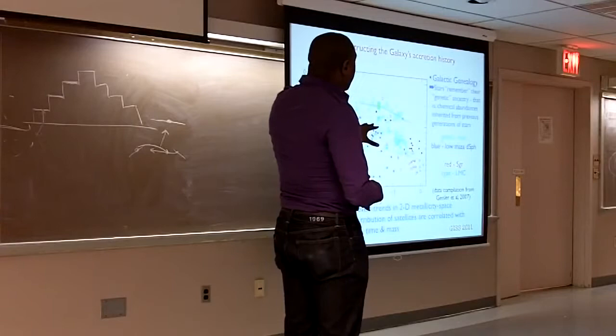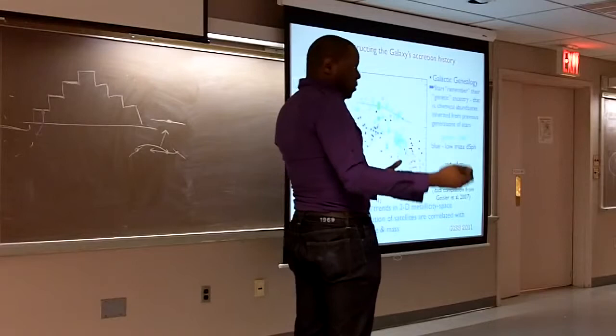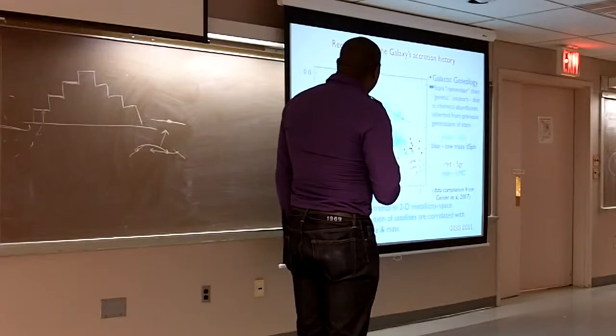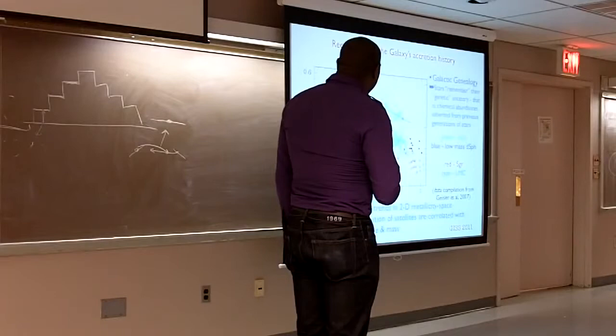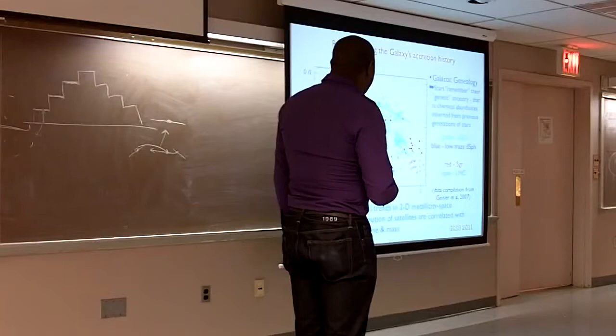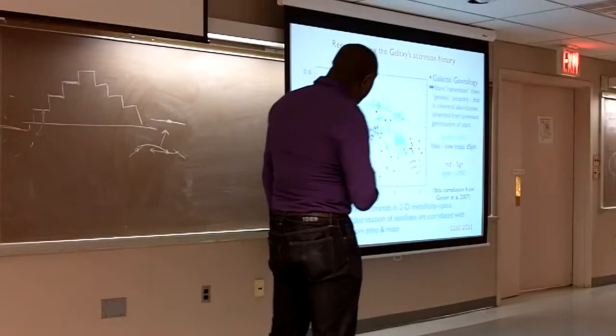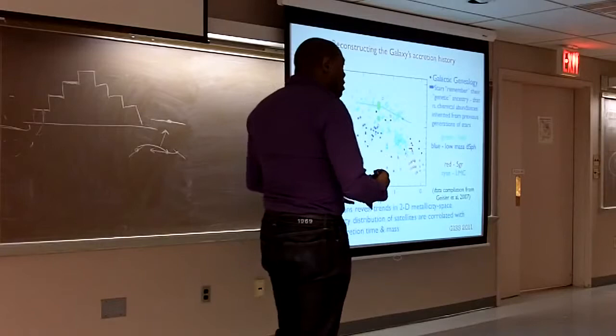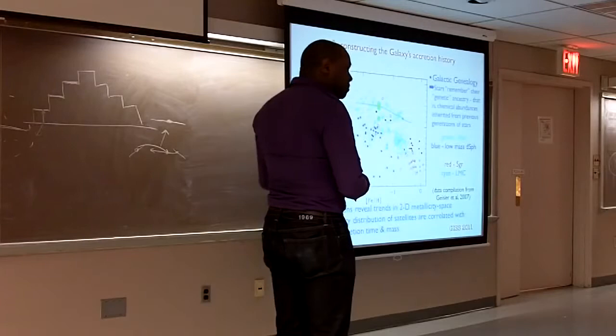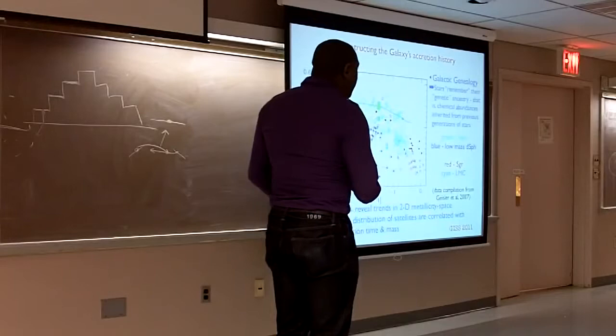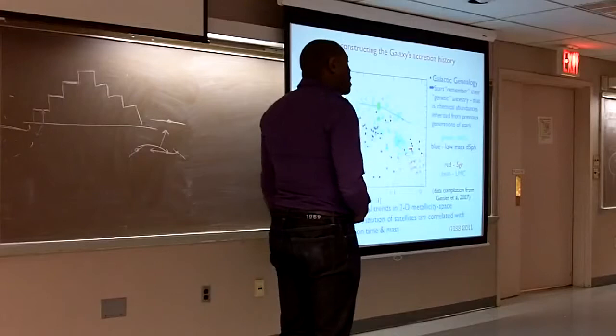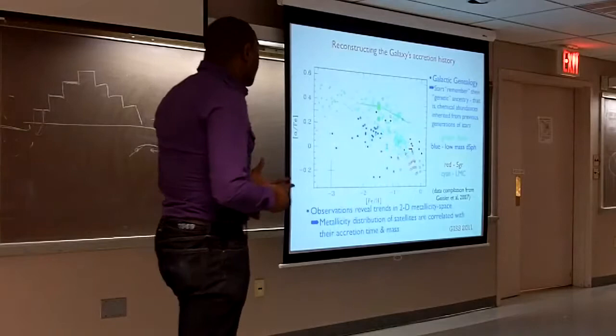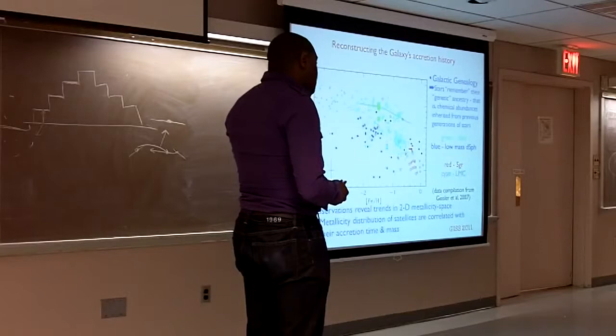And so what I really want to point out here is that stars actually remember their genetic history. That's to say that the chemical abundances that they inherited from previous generations of stars via the supernovas that went off in that past star formation event is then transferred to any stars that are now formed out of that new gas. And so that mixture is just then locked up into the atmospheres of those stars. So when we study them, we split up the light. Spectroscopically, we can then measure these different abundances in the stars.